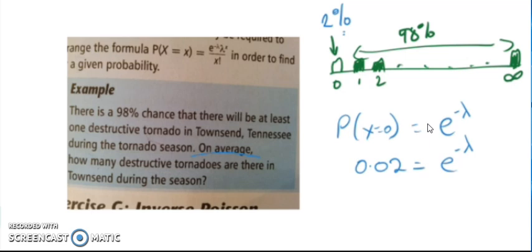Now if we take the natural log of both sides, we can bring this power down as well as eliminate the e. So we want the natural log of 0.02. And when we take the natural log of this, we're left with negative lambda.